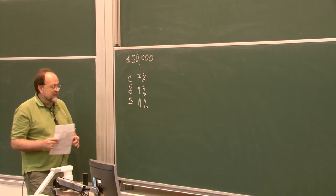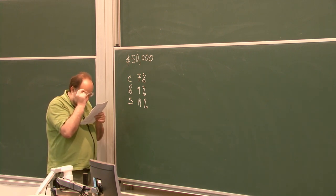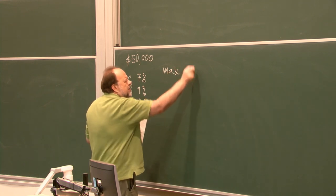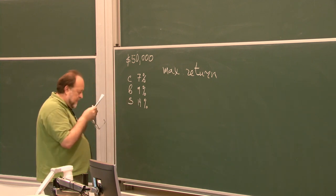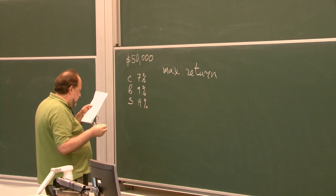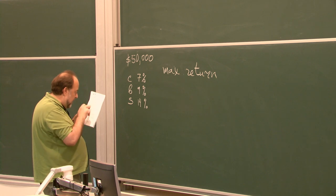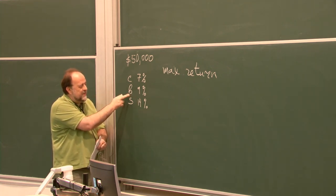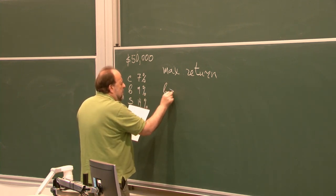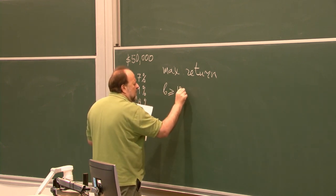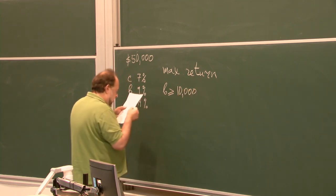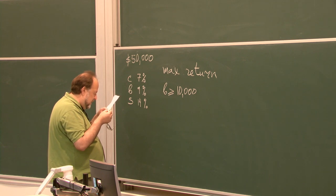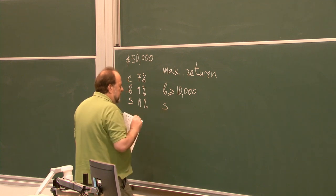She would like to maximize her yearly return on investment, but she wants to invest a minimum of $10,000 in bonds, so B should be greater than or equal to $10,000. Also, investment in stocks should not exceed the combined investment in bonds and savings certificates, so S should be less than or equal to B plus C.